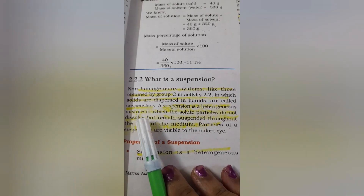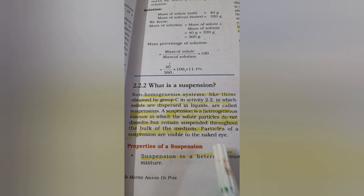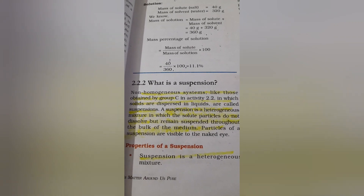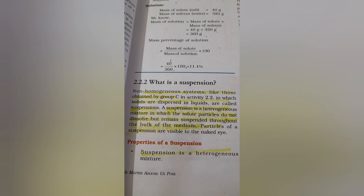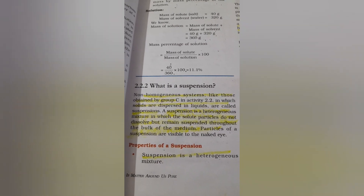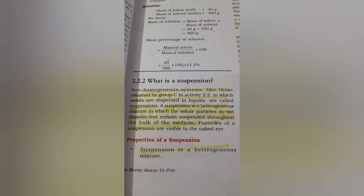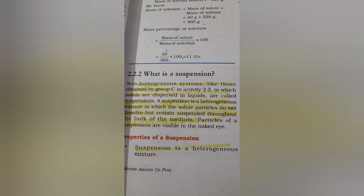Today we will begin with what is meant by suspension. It is a very common term used in science. Suspension is a heterogeneous mixture in which solute particles do not dissolve but remain suspended throughout the bulk of the medium, and these particles can be seen with the naked eye. For example, if you take water and put sand particles in it, the sand will not dissolve — you can see with your naked eye that sand particles are distributed throughout the solution. That is what we call suspension.